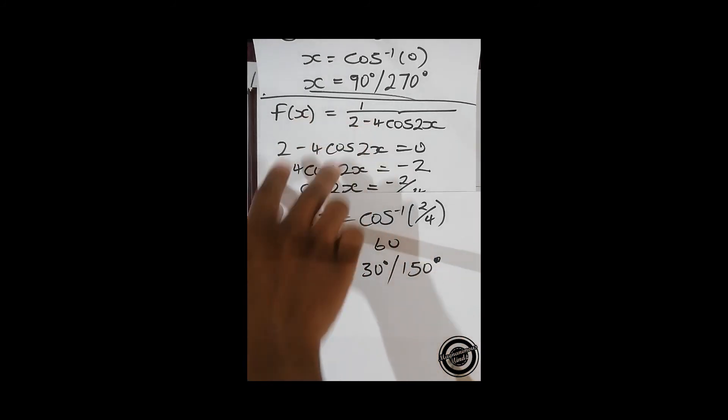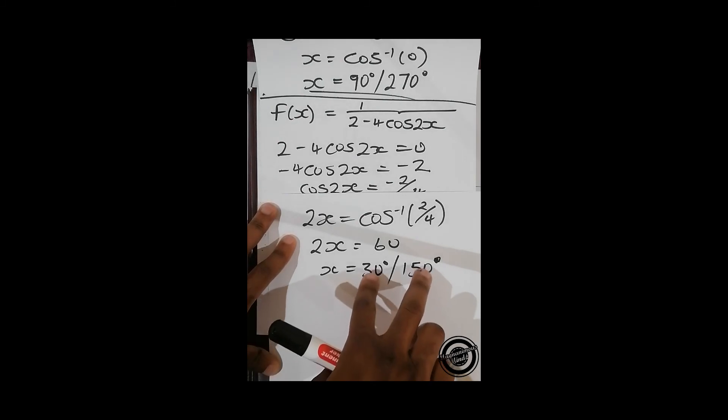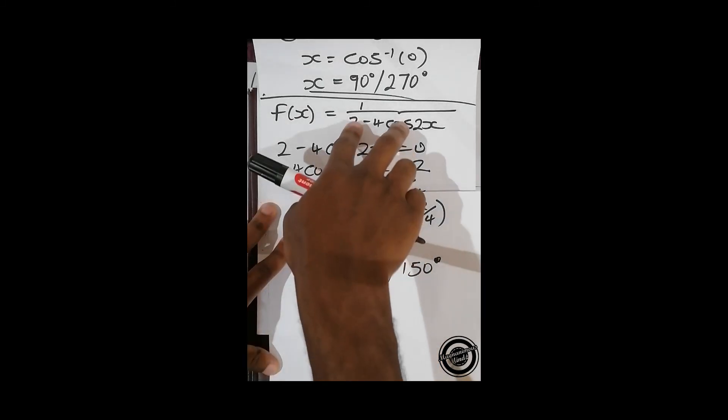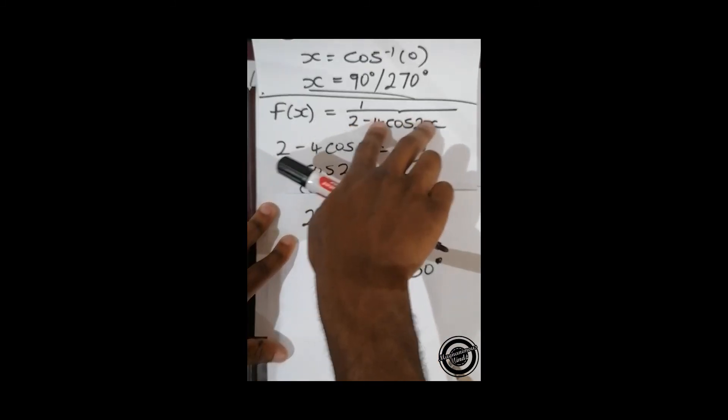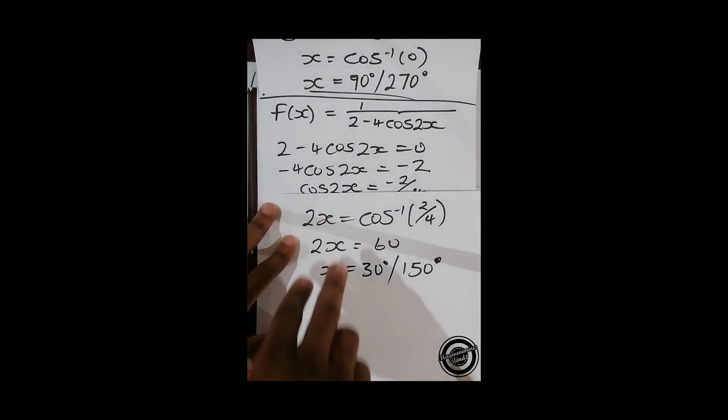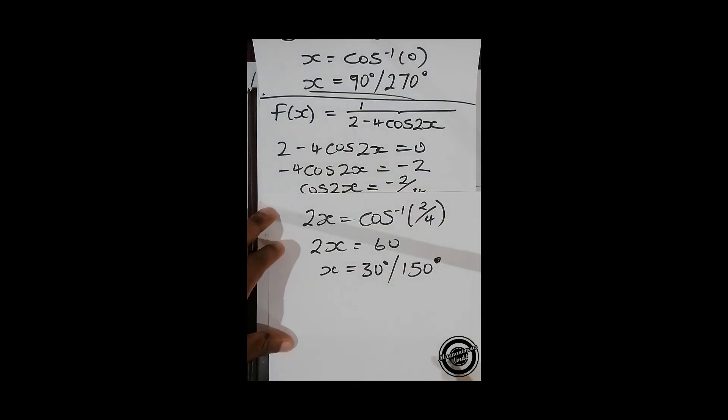So these are the points whereby this function is discontinuous, because if you plug in this into this it's going to give you zero in the denominator and one divided by zero is undefined. So that's how we do these questions.